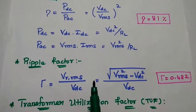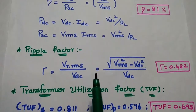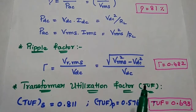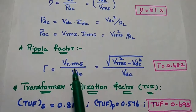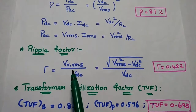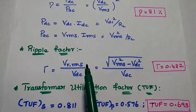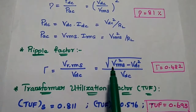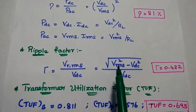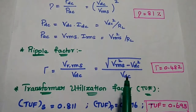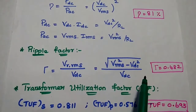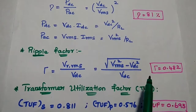The next one is ripple factor. Ripple factor defines the unwanted AC component present in the DC output. Here gamma equals Vrms divided by Vdc, where Vrms is the AC content on the output side, equal to √(Vrms² − Vdc²). This ripple voltage divided by the DC voltage represents the ripple factor — the amount of AC component present in the DC output.